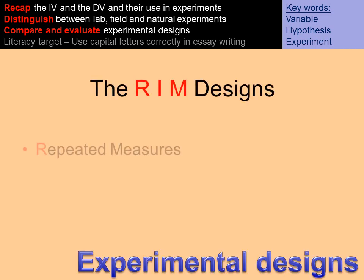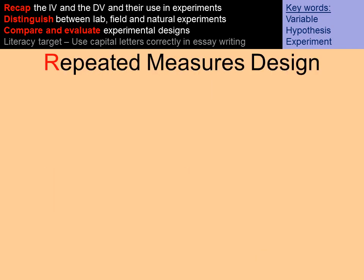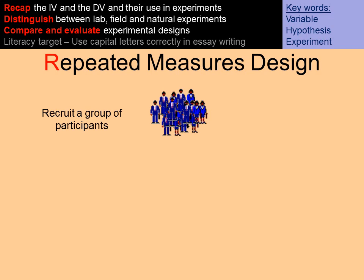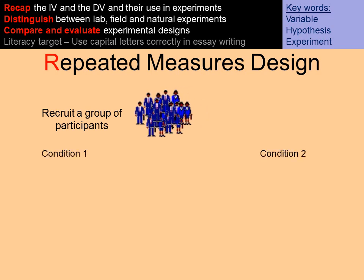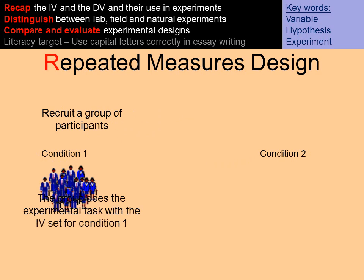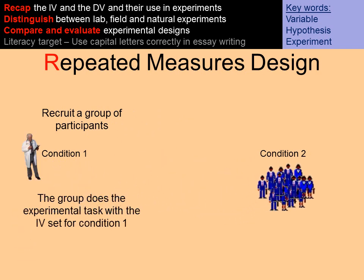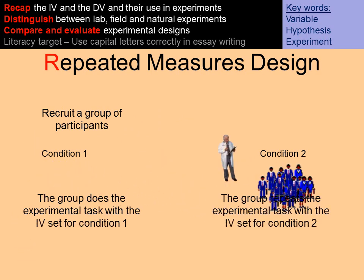For experimental designs you need to know R, I, M — repeated measures, independent measures, and matched pairs design. A repeated measures design is quite simple: you recruit a group of participants and all of these participants do condition one, and then all of them do condition two.